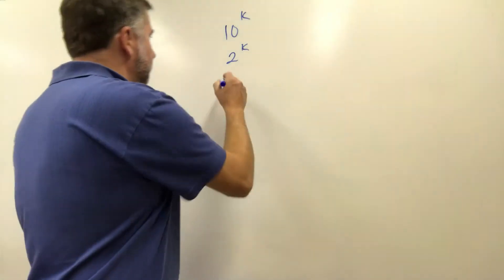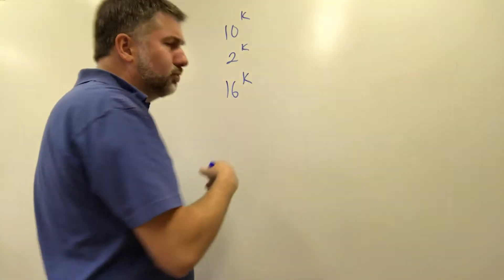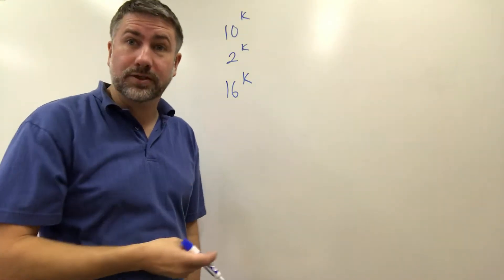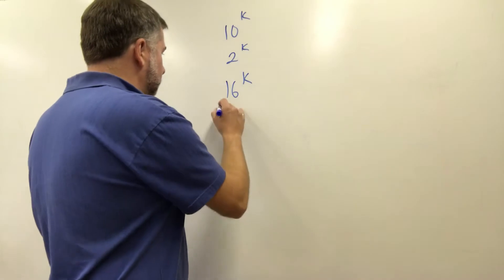So if we had a base sixteen number, sixteen to the power of k, which we'll get to later but it's a good example to use for now because we do use base sixteen in computing from time to time. We call it hexadecimal.